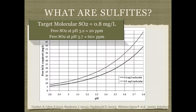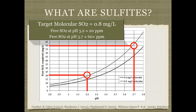If you're aiming for a molecular SO₂ of 0.8 mg/L, at pH 3.2 you might only need a free SO₂ of about 20 ppm. But at pH 3.7, you might need 60 ppm — a much larger amount, all pH dependent. When I was first learning, I couldn't measure sulfites or pH and would just guess. Now that I can measure both, I can really dial in the free SO₂ level to where it needs to be without using excessive amounts.